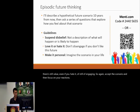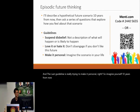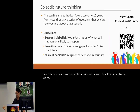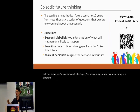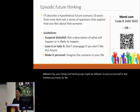The last guideline is really trying to make it personal. Imagine yourself ten years from now — you'll have essentially the same values, same strengths and weaknesses, but you're in a different life stage. Imagine you might be living in a different city, your family and friend groups might be different. Do the math: add ten to your current age and think about that for a moment.